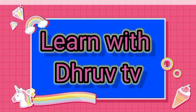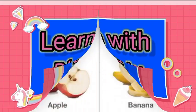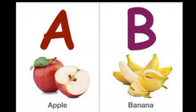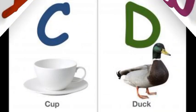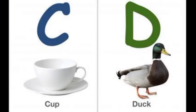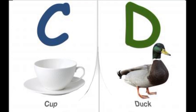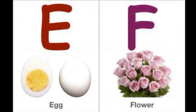Learn with Throop TV. A for Apple, B for Banana, C for Cup, D for Duck, E for Egg, F for Flower.